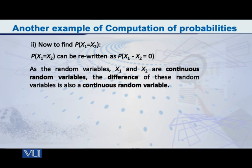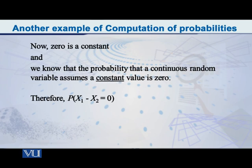Now, since the random variables x1 and x2 are continuous random variables, therefore their difference is also, my dear students, a continuous random variable. But the point that you have to understand here is that if we are saying we are wanting to compute the probability that this new random variable x1 minus x2 is equal to 0, what we are thinking about is that 0 is a constant. And we know by the basic definitions that the probability of a continuous random variable being equal to a constant is always 0.